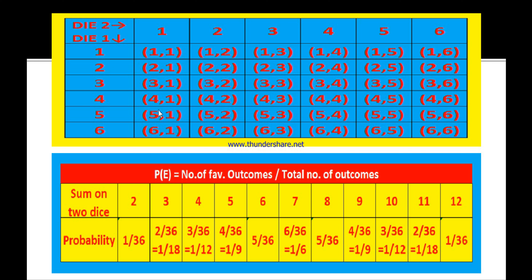To get sum 6, there are 5 favorable outcomes, so the probability is 5 by 36. To get sum 7, there are 6 favorable outcomes, giving 6 by 36, which simplifies to 1 by 6.